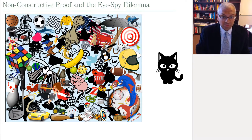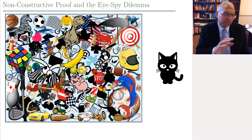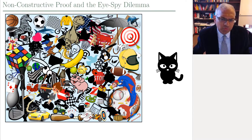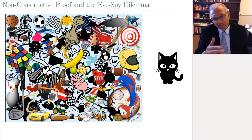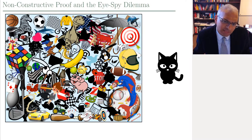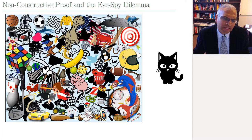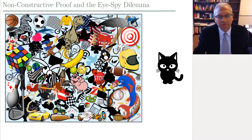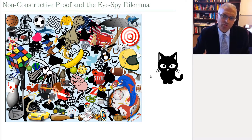I'm going to prove to you that something exists without telling you how to find it. Here's an example of a non-constructive proof — this looks like a kid's picture book. This is an instance of the game called I Spy. You may also be familiar with Where's Waldo, where you have to find Waldo in a picture. In this instance of I Spy, you have to find this black cat in this picture.